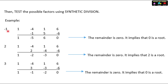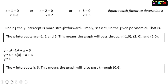Continue trying positive 2 and positive 3 until the last value satisfies zero. The roots are negative 1, positive 2, and positive 3, giving factors x plus 1, x minus 2, and x minus 3. Finding the y-intercept is more straightforward — simply set x equal to 0. The x-intercepts are negative 1, 2, and 3, meaning the graph passes through (negative 1, 0), (2, 0), and (3, 0).